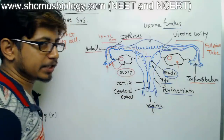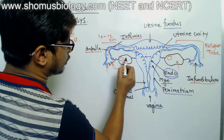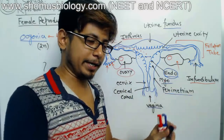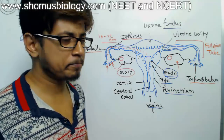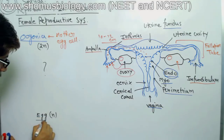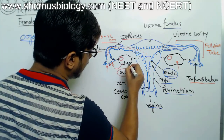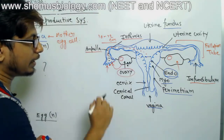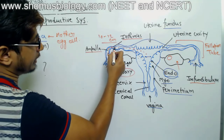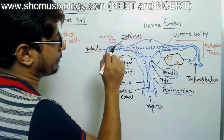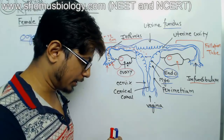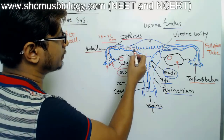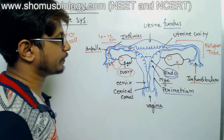In oogenesis, the oogonium slowly matures into a primary oocyte, which then produces a secondary oocyte, which in turn matures into the ovum or egg. Once the egg is released, it is caught by the infundibulum and travels through the fallopian tube. Inside the fallopian tube, a sperm fertilizes the egg by donating its nucleus.